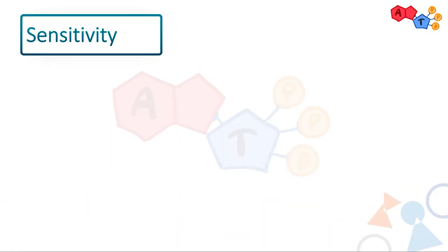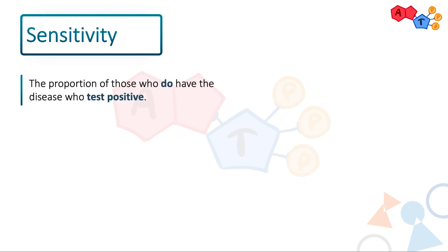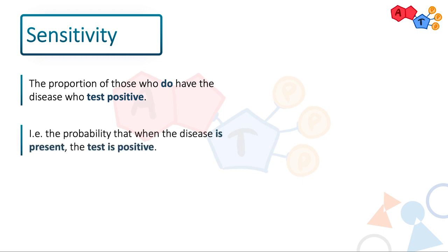If you open any textbook, you'll probably be greeted with this definition of sensitivity, which is the proportion of those who do have the disease who test positive. In other words, it's the probability that when the disease is present, the test is positive. Now this definition is good when you want to come back and review sensitivity, but it doesn't really alone explain sensitivity. So we need a consistent framework that we can always apply sensitivity to so as to not ever forget it.